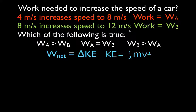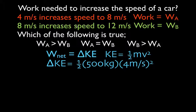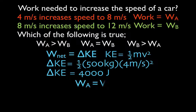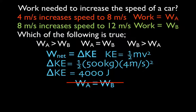You might jump to the conclusion that since we go from 4 to 8 — a change of 4 meters per second — and then from 8 to 12 — also a change of 4 meters per second — it's the same car with the same increase in speed. So you might calculate the change in kinetic energy as one-half times 500 times 4 squared and get 4,000 joules for both, concluding work A equals work B. But that's wrong — because the theorem uses velocity squared, not simply the change in velocity.